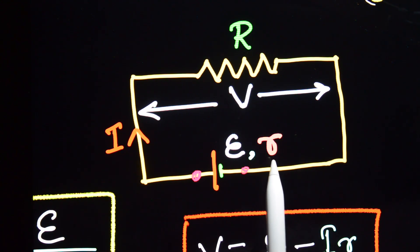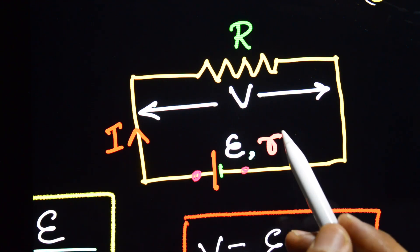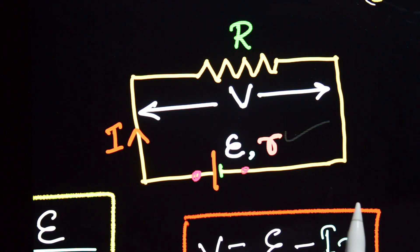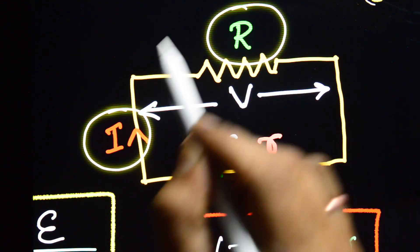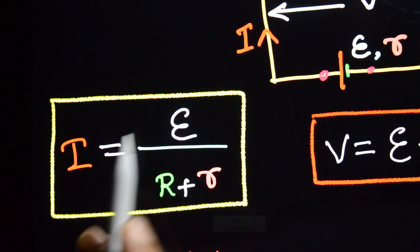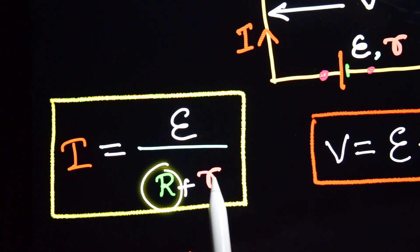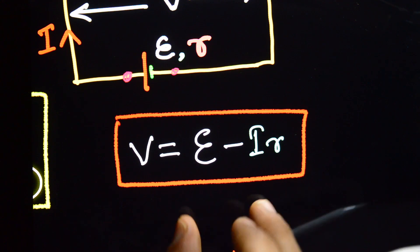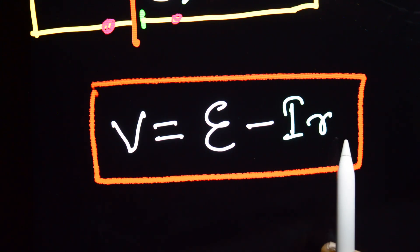What is internal resistance? That is the opposition offered by the flow of charge through the cell itself. The external resistance is R. And the current I is equal to E divided by R plus small r. The terminal potential difference V is equal to E minus I into r.